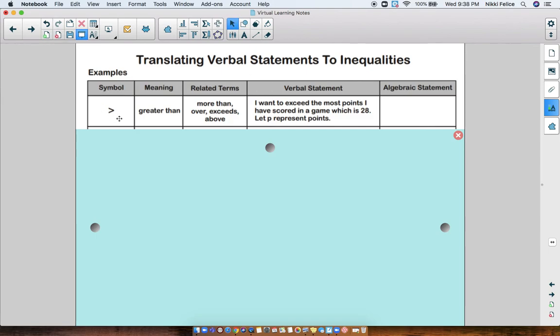So for example, this symbol right here means greater than. But greater than are not the only words used for that symbol. I want to exceed the most points I have scored in a game, which is 28. So now I want to write an algebraic statement, an inequality that represents what I just read. So if I want to exceed 28 points, does that mean I want greater than 28 points or less than 28 points? I want greater than 28 points. So I need P to be greater than 28. How do I write that? You write P is greater than 28.